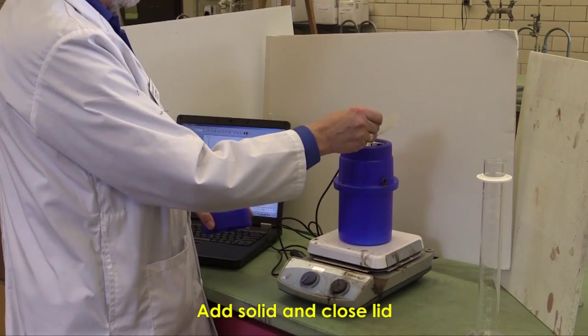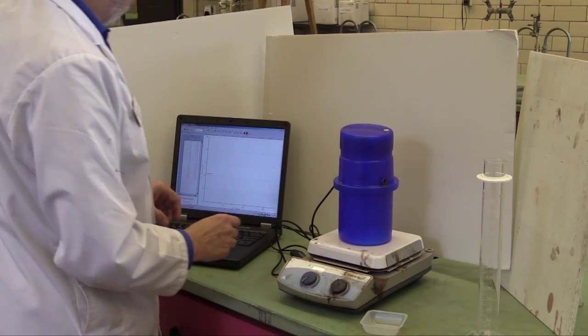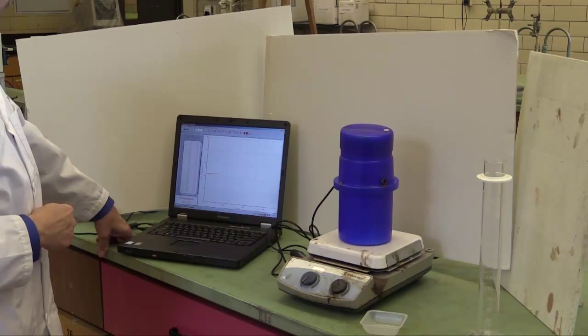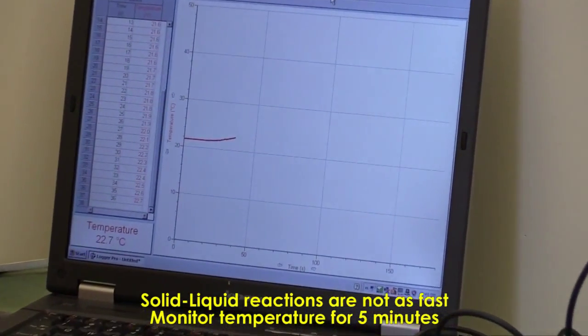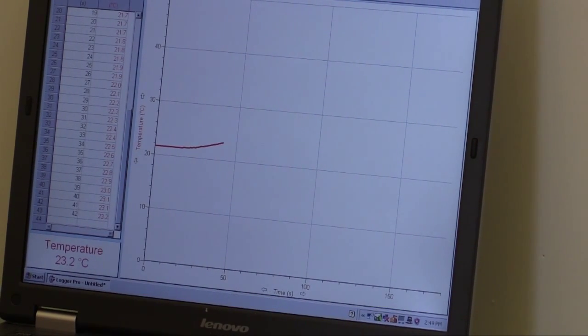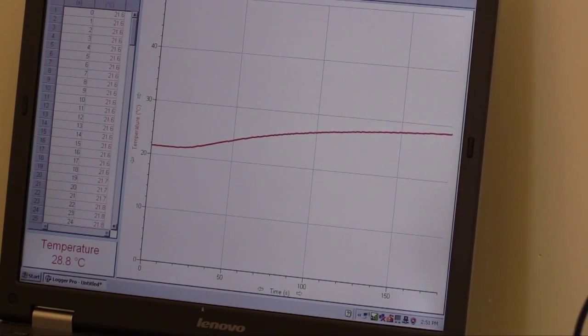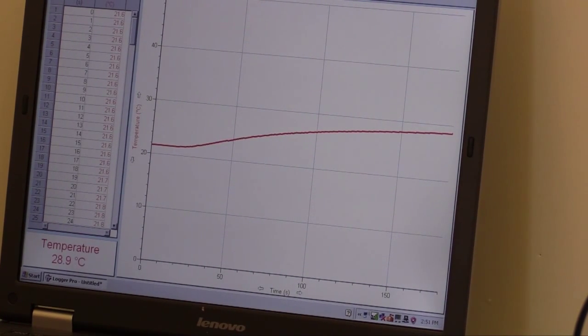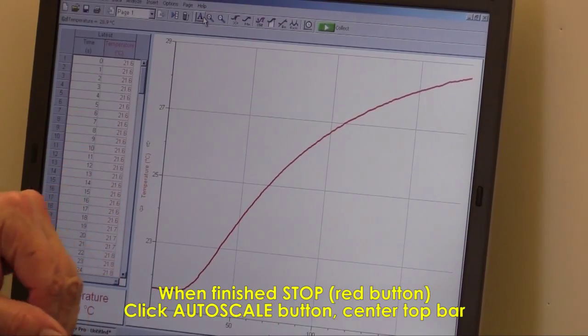And this is recording 21.6 degrees fairly consistently. I'm now ready to start the reaction. And to do that, I put all of the magnesium in. Tap to make sure it's all out. Put the lid on and watch the reaction. It's taking a while, but the temperature is going up slightly. This one is not as fast as just mixing acid and base or indeed hot and cold water. So we'll need to wait for this one until we reach a maximum temperature. All right. This has now come to a stable temperature. It's taken a few minutes to do that. So we stop it and then auto scale. You see it's a much, quite a long slope, but it does get up to a high temperature.